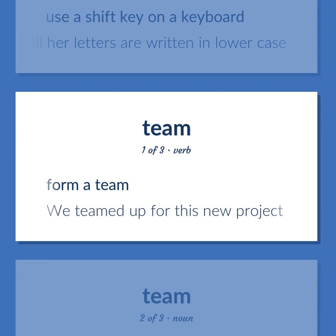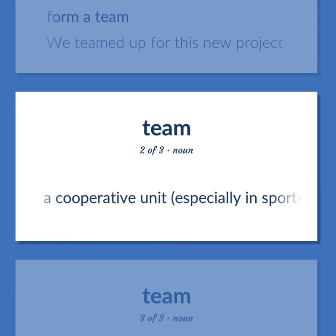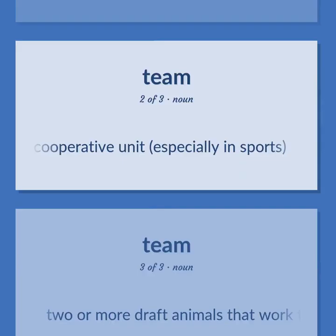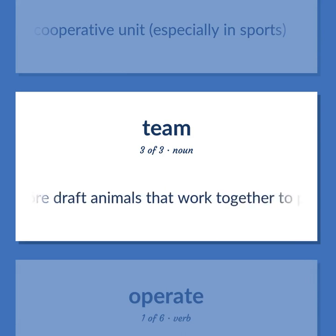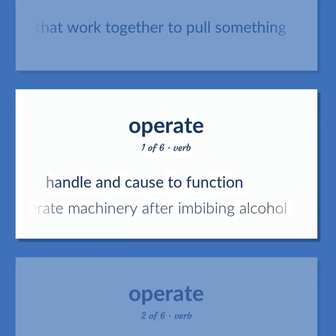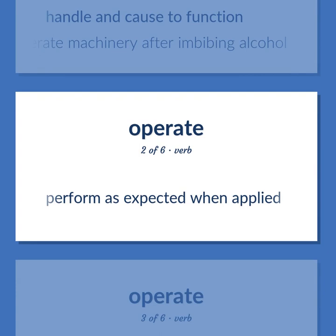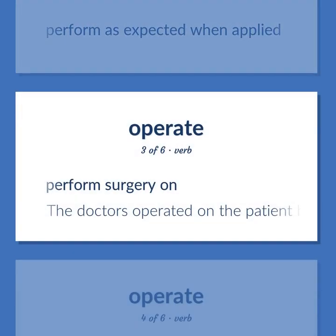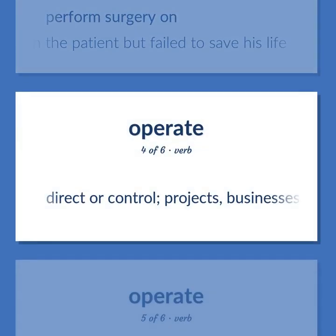Form a team — we teamed up for this new project. A cooperative unit, especially in sports. Two or more draft animals that work together to pull something. Handle and cause to function — do not operate machinery after imbibing alcohol. Perform as expected when applied. Perform surgery on — the doctors operated on the patient but failed to save his life. Direct or control projects, businesses, etc.